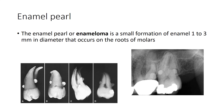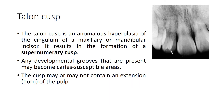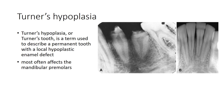Enamel pearl, also called enameloma, is a small formation of enamel 1 to 3 mm in diameter that occurs generally at the roots of molars. They appear as radiopaque rounded masses on the root surface. Talon's cusp is an enamelous projection of the cingulum of a maxillary or mandibular incisor resulting in a supernumerary cusp; developmental grooves may become caries-susceptible and the cusp may or may not contain an extension of the pulp horn. Turner's hypoplasia, or Turner's tooth, describes a permanent tooth with a localized hypoplastic enamel defect, most commonly seen in mandibular premolars, where only one or two teeth in the arch are affected.